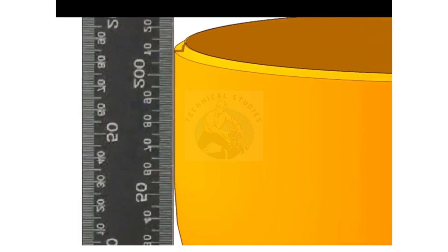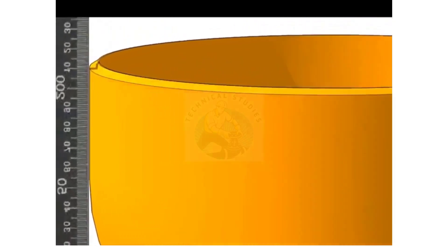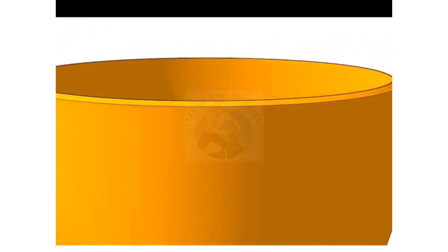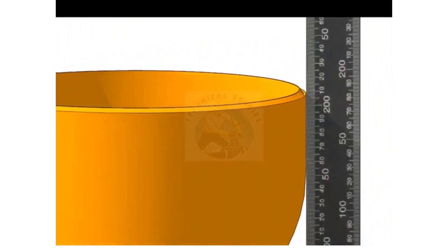Check the other sides also. If you find any gap on any side, equally divide it on both sides by giving shim plate at the bottom of the reducer.